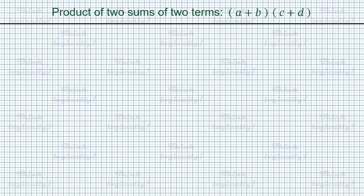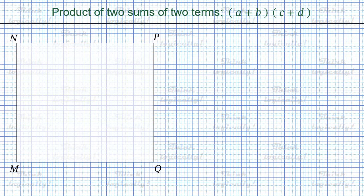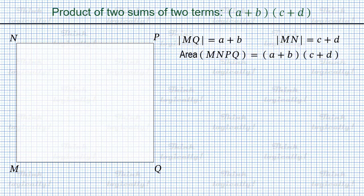Take a rectangle MNPQ, where side MQ has length a plus b, and side MN has length c plus d. The area of rectangle MNPQ is a plus b times c plus d, and we need to find this area.